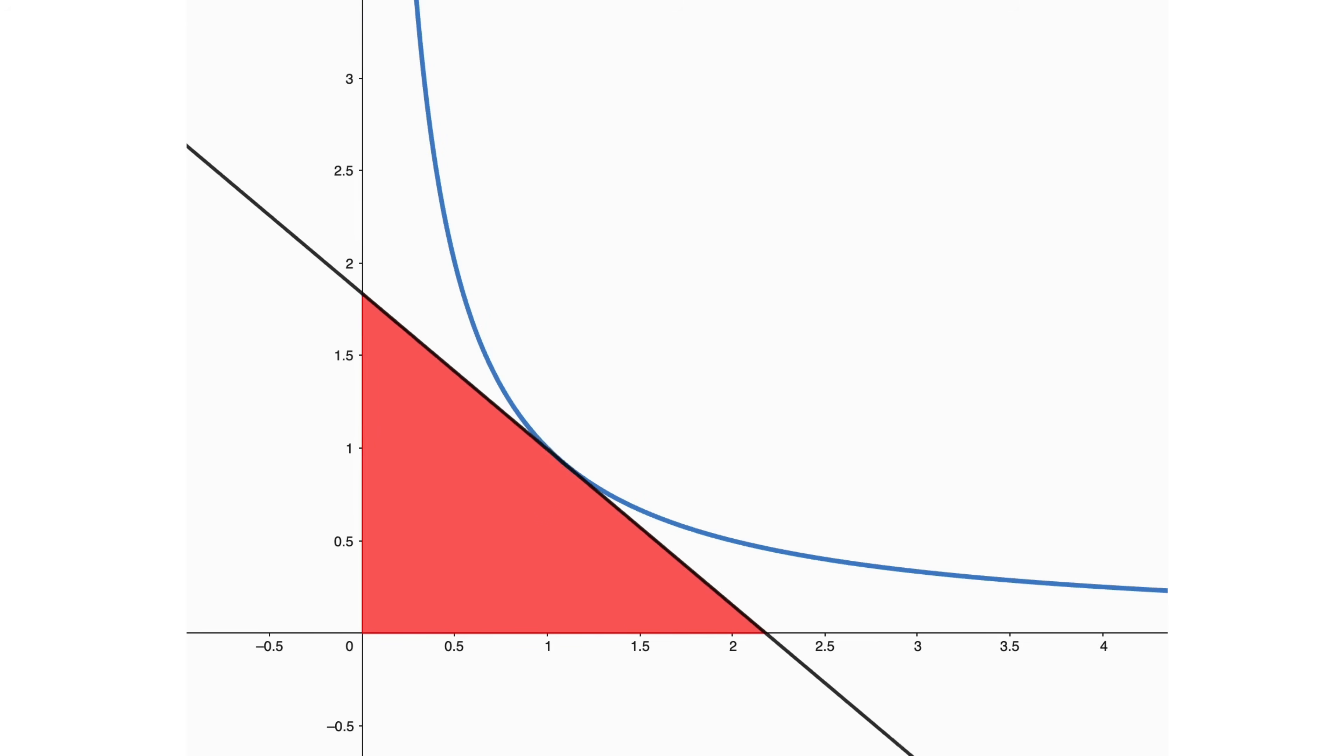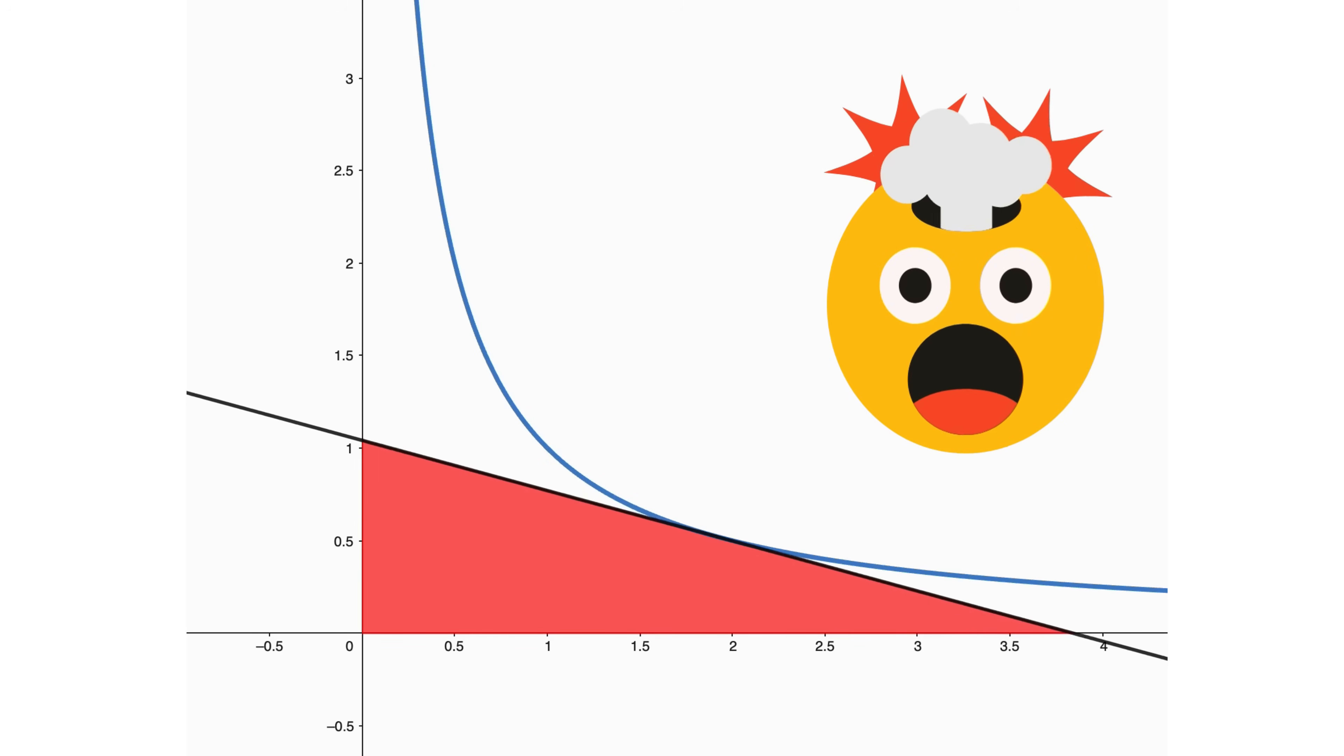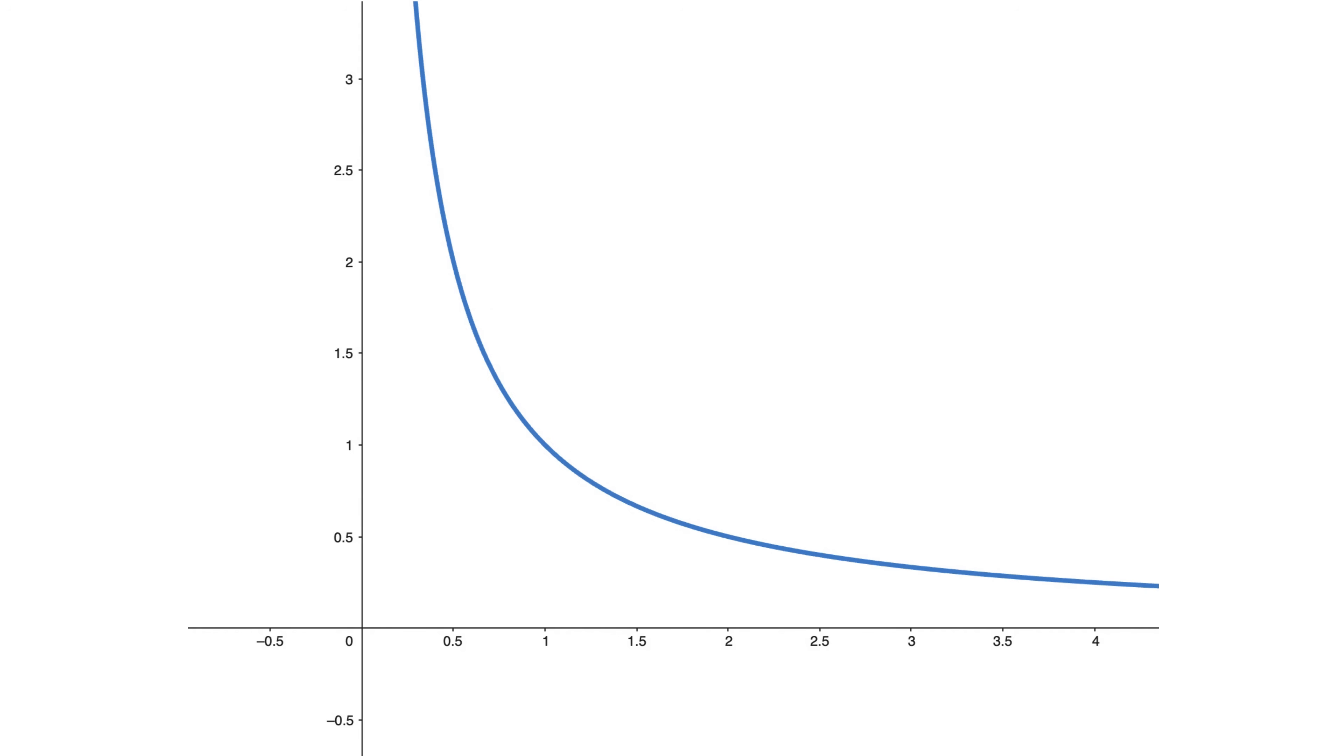This is a super cool problem because the end result is going to blow our mind. Look at this curve of y equals 1 over x. Now consider any point p on this curve. Also assume that this point has its x-coordinate as a. So its y-coordinate will be 1 over a.